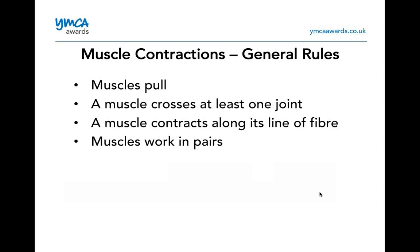General rules of muscle contraction: muscles pull. A muscle contracts along its line of fibre, and muscles work in pairs — which is why training programs would pair chest and back, biceps and triceps, quads and hamstrings.